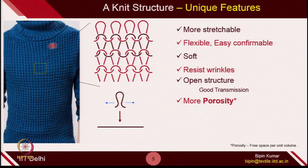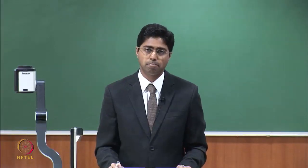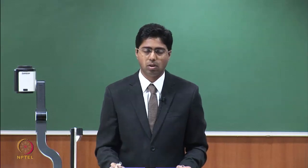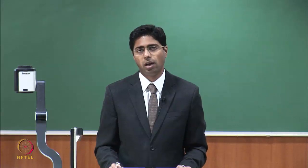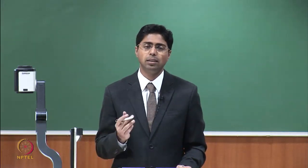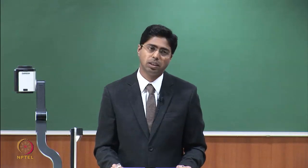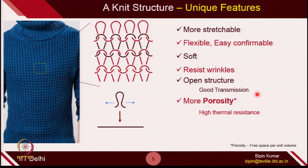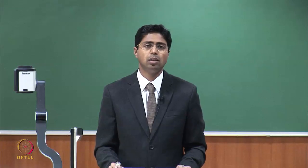Knit structure is highly porous. Porosity is nothing but the free space which is available in the structure per unit volume — how much percentage of a given volume is available as free space. If you see many sweaters or woolen garments, they are made up of knitted structures. The main reason is that it is very, very porous. The beauty of porosity is that it can entrap air. And once it entraps air — air having very high thermal resistance — it does not allow heat to exchange properly. This is why knitted is very popular in woolen garments, because it can entrap air which does not allow heat to pass through.